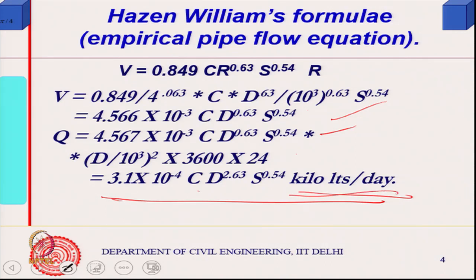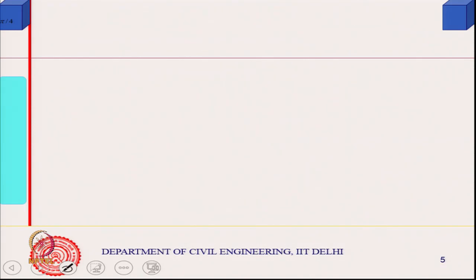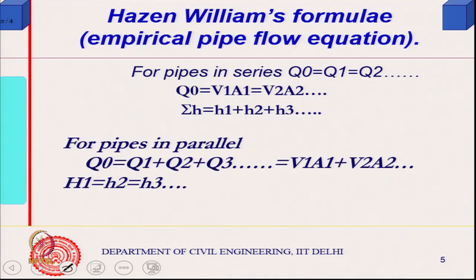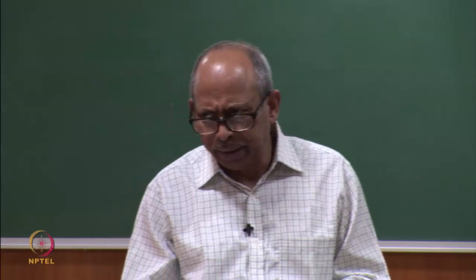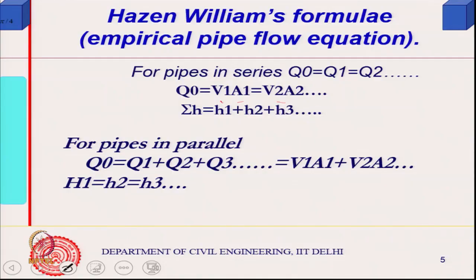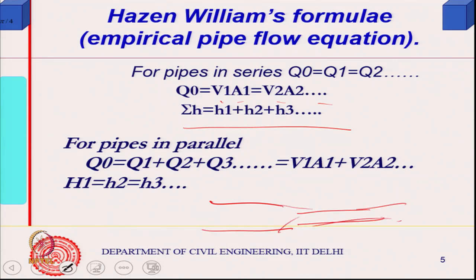Now consider pipes in series. For a steady flow, flow is constant — so v₁a₁ must equal v₂. If there are two pipes in series, flow must be constant, and the head will be the sum total of the head differences between the two pipes in series.